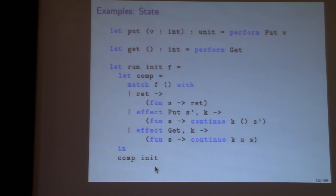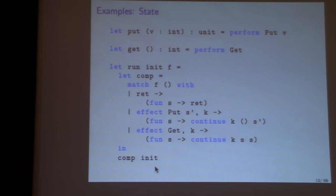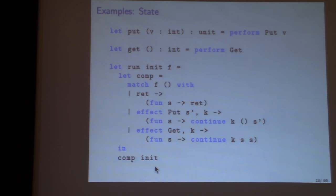A more interesting example is state. There are two operations: put, which takes an integer and returns unit, and get, which returns an integer. The implementation is much like the state monad. In the return case, you get a function that takes a state, ignores it, and returns the value. In the put case, you get a function that takes a state, ignores it, and continues with the new state. For get, you get a function that continues with the state as its return value and leaves the state unchanged.